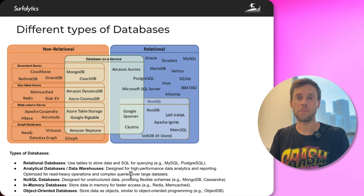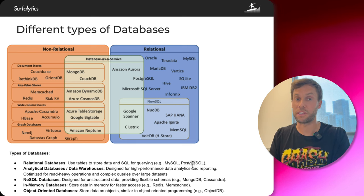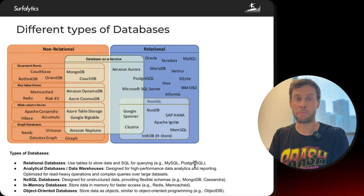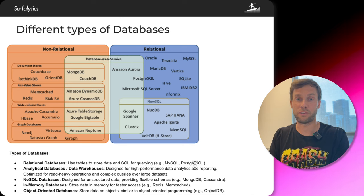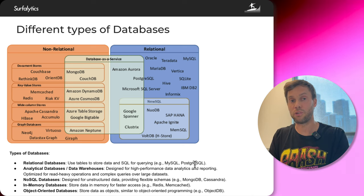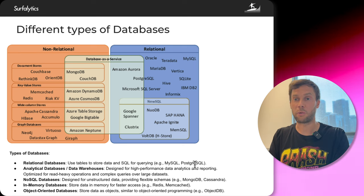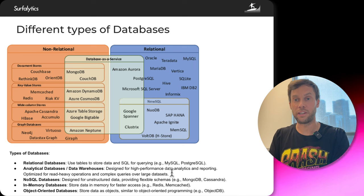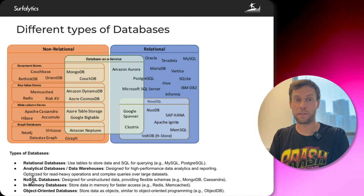Analytical databases, or data warehouses, can be the same systems like MySQL, Postgres, or SQL Server if your data size is manageable. But if your data is terabytes, it would be hard to use MySQL or Postgres, and it's better to use a database specifically intended for that — for example, Redshift, or Vertica. NoSQL databases — we recently published a video on Surfalytics answering when you should use a NoSQL database.